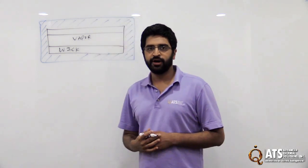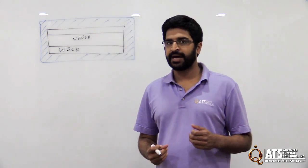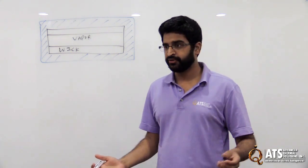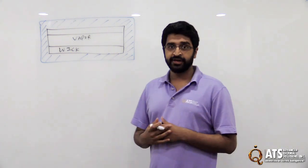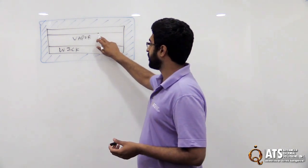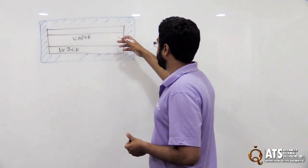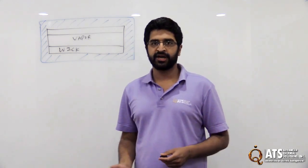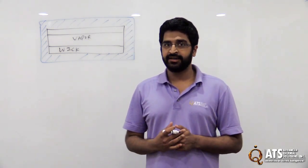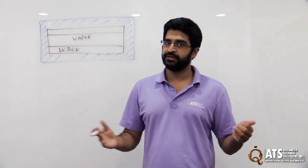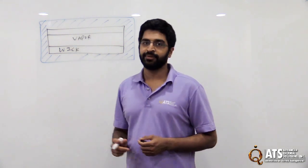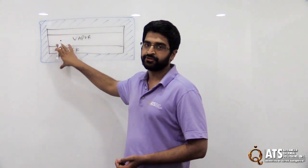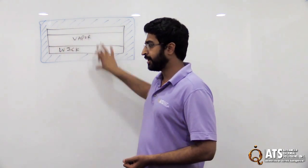So generally when you've heard about how heat pipes have very high conductivity, that's true compared to solid metals. But when you've heard absurd numbers, you're talking about the vapor space here. In this vapor space the thermal conductivity, the effective thermal conductivity is so high that you basically assume that there's no temperature drop across there. But there is a temperature drop associated with the heat transfer going to the vapor space and coming out of there.